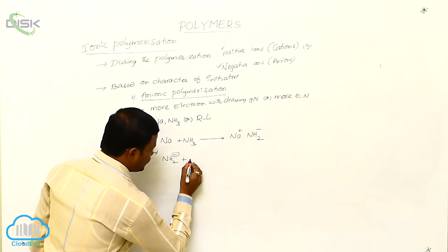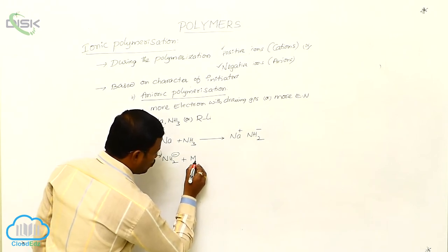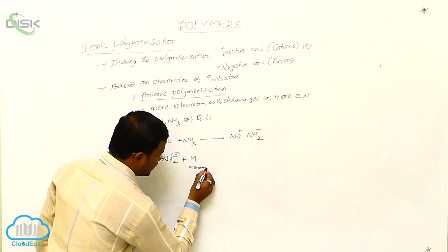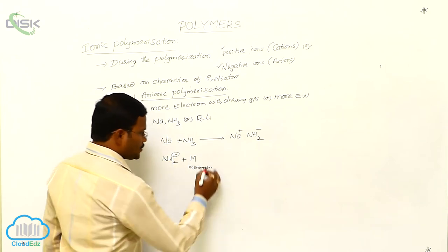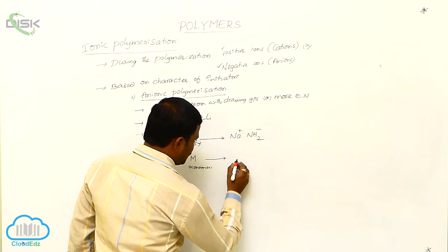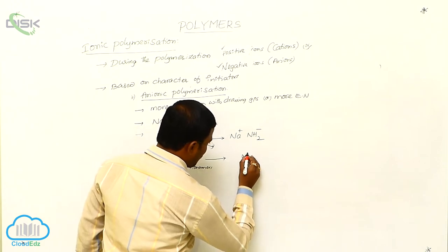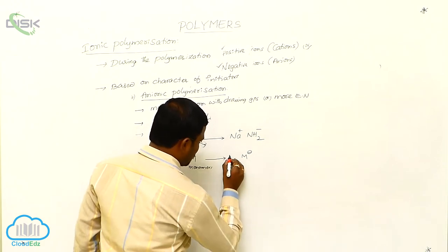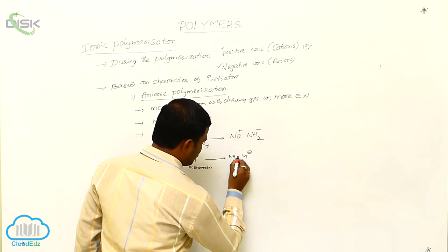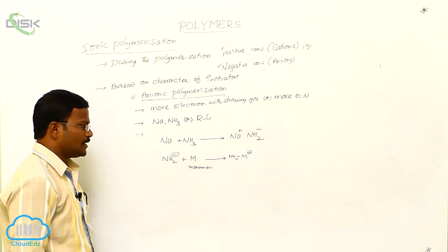This is going to react with one monomer. I want to write it as M, which indicates monomer. So it reacts with this and produces NH2 M minus.